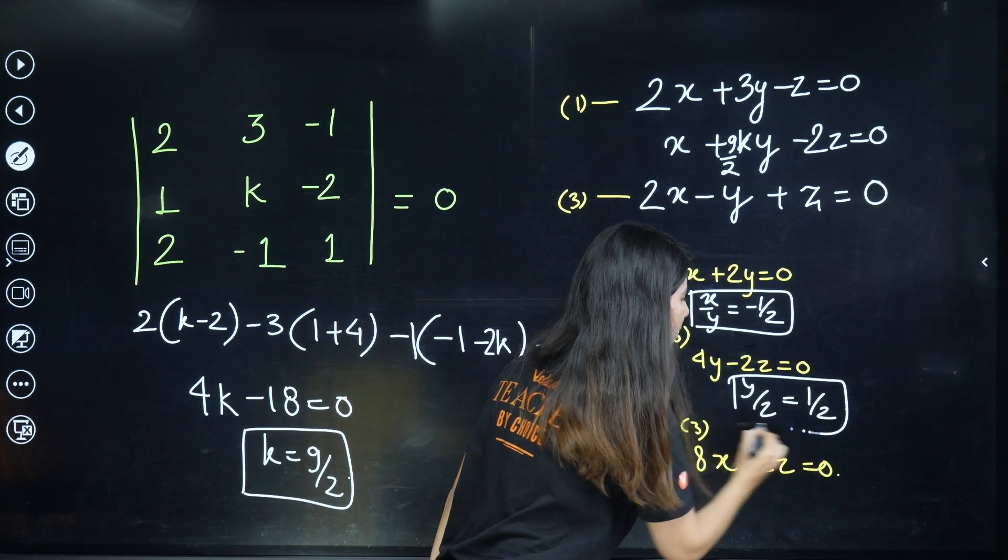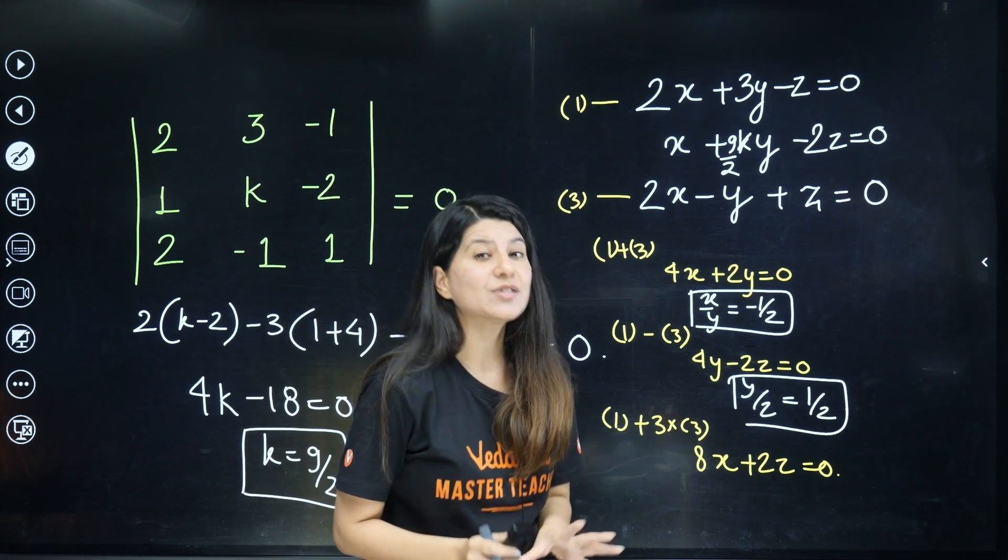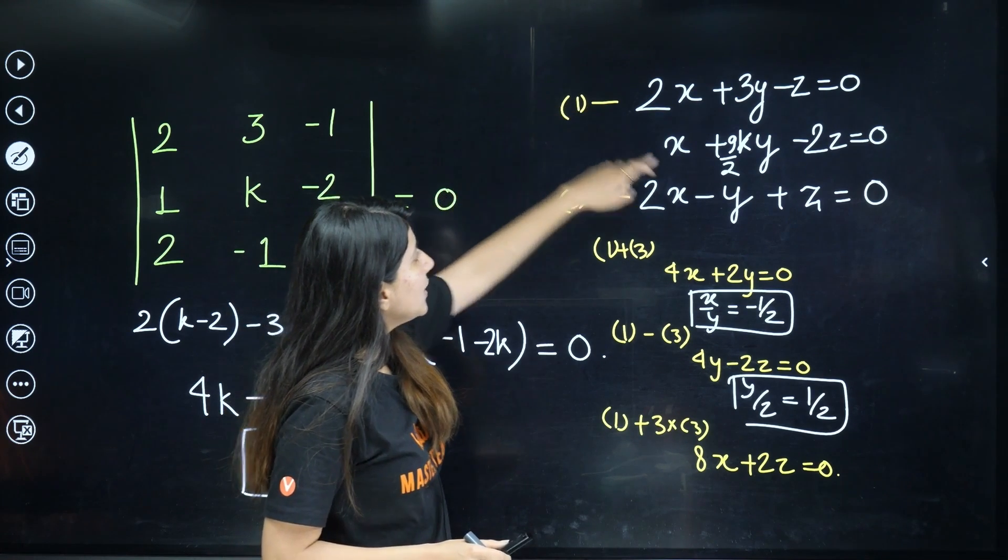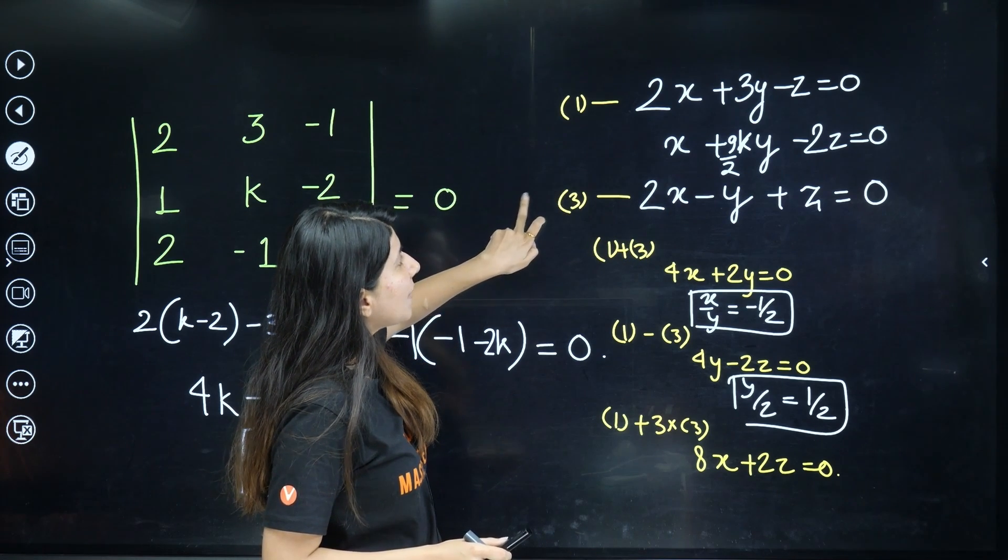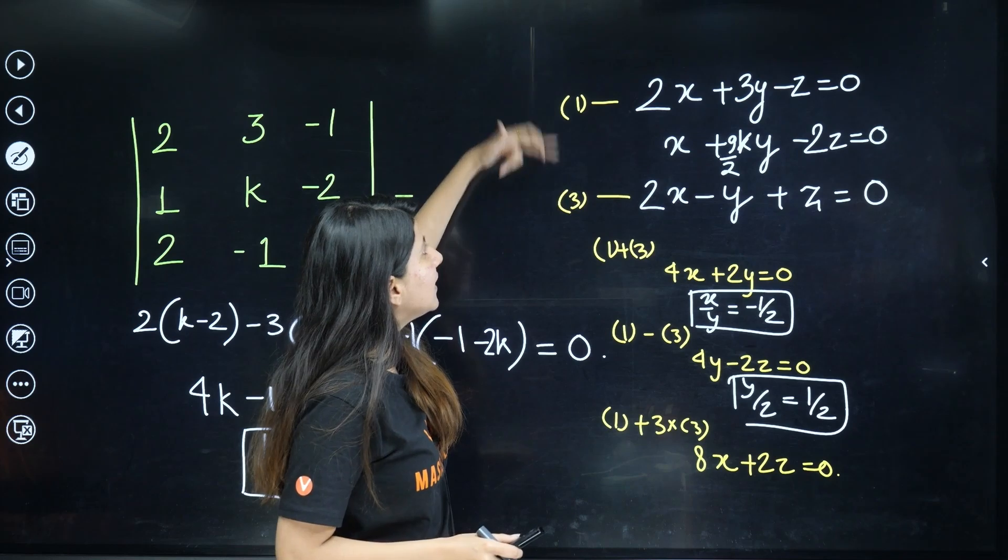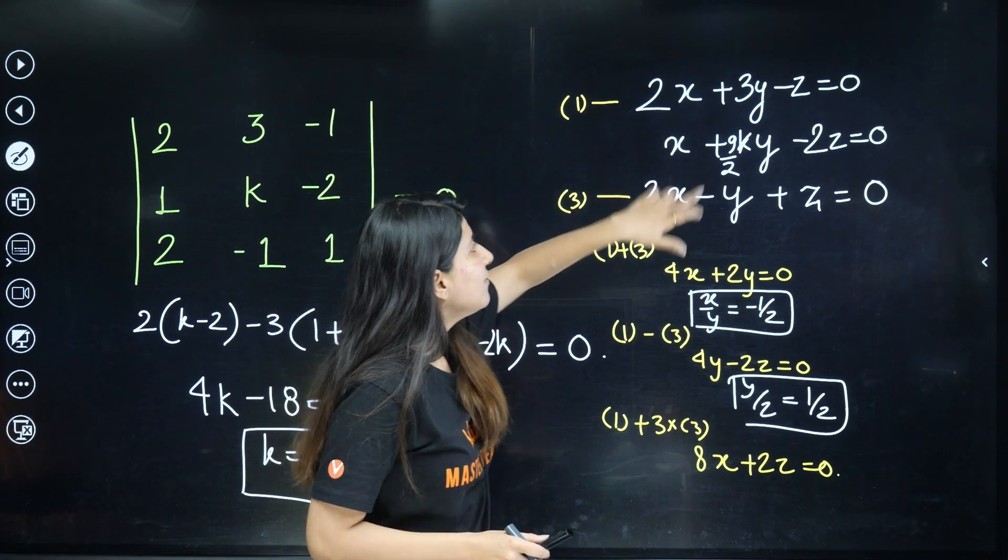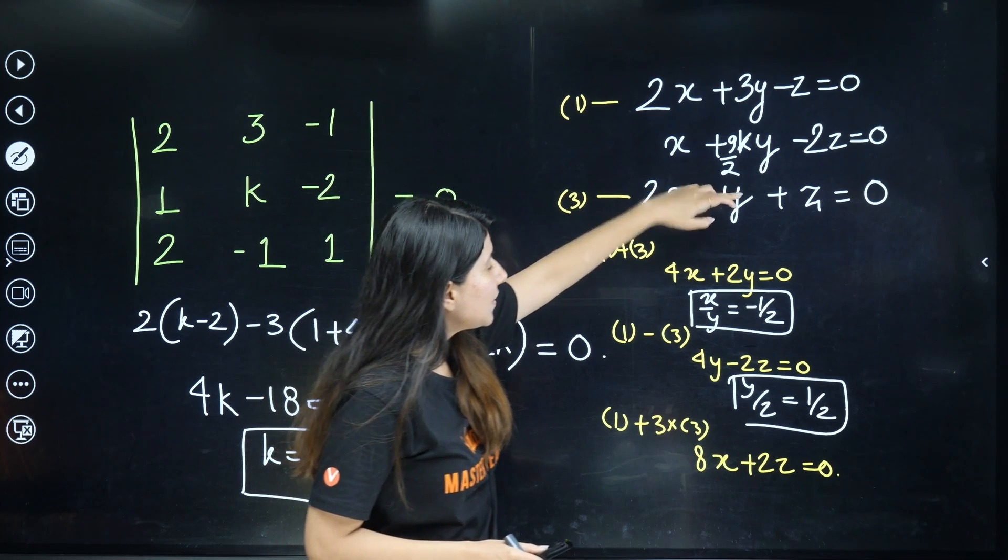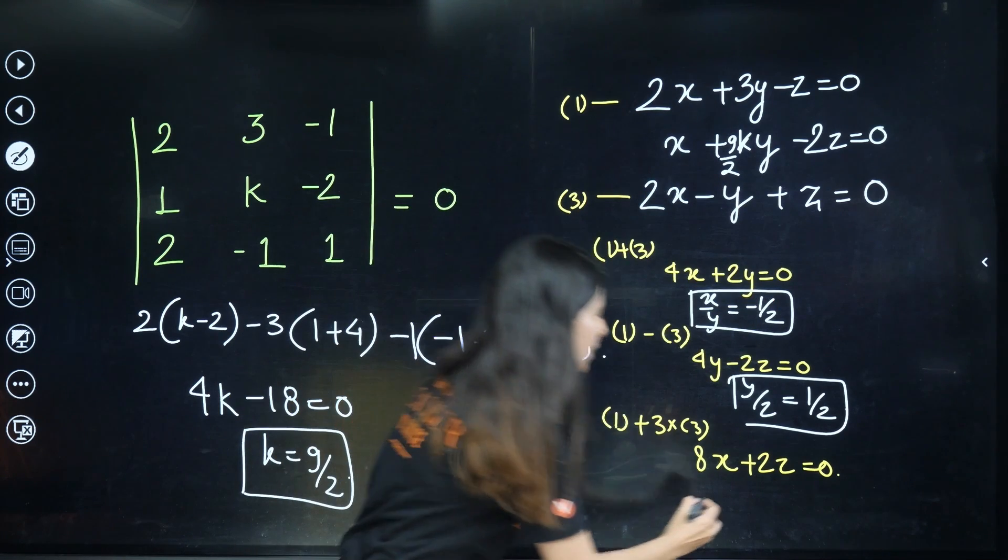y/z is coming out as 1/2 and now what you need to do is you need to eliminate y. To eliminate y, you actually need to multiply third equation by 3 and then add it with 1. The moment you add these two equations, y will get eliminated and it will become 8x + 2z = 0.